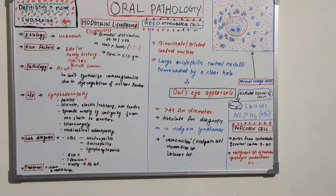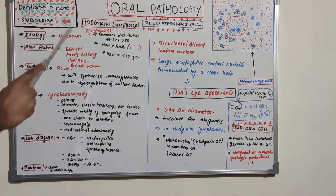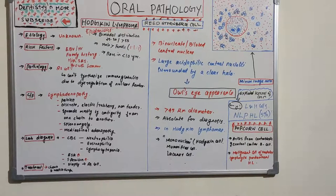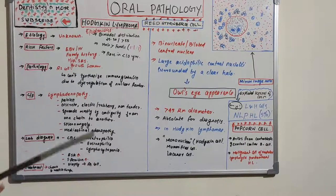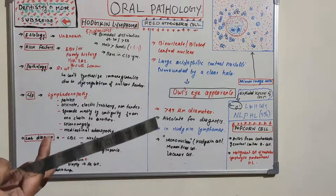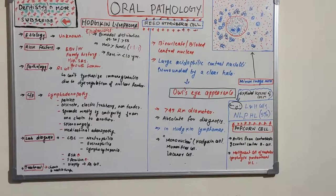It is important to distinguish etiology from risk factors. Etiology refers to the direct cause — for example, Streptococcus mutans causes dental caries. Risk factors are contributing factors that increase the chances of developing the disease but do not cause it in everyone. High socioeconomic status, for instance, is a risk factor for dental caries because those individuals may consume more sugar — it is not a direct etiological cause.